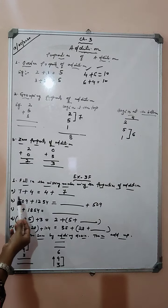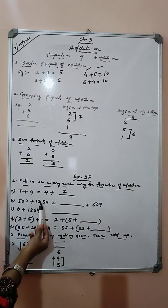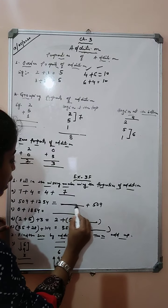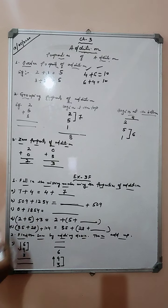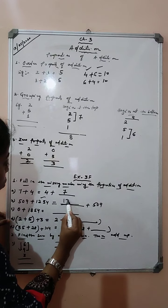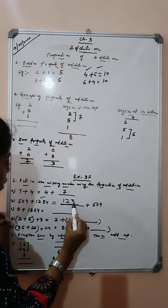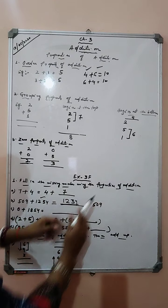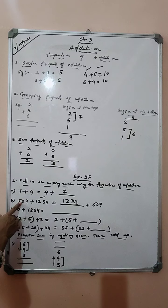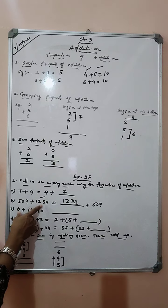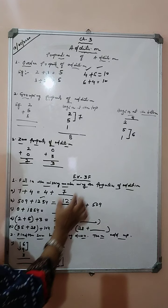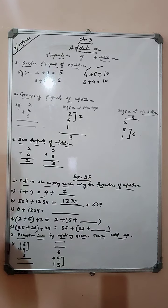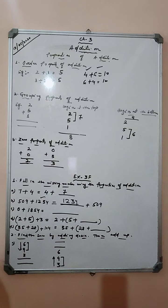Now 509 plus 1234 equals to blank plus 509. Which number is missing? Our answer is 1234. We have simply changed the order: 509 plus 1234 becomes 1234 plus 509. This is also the order property of addition.